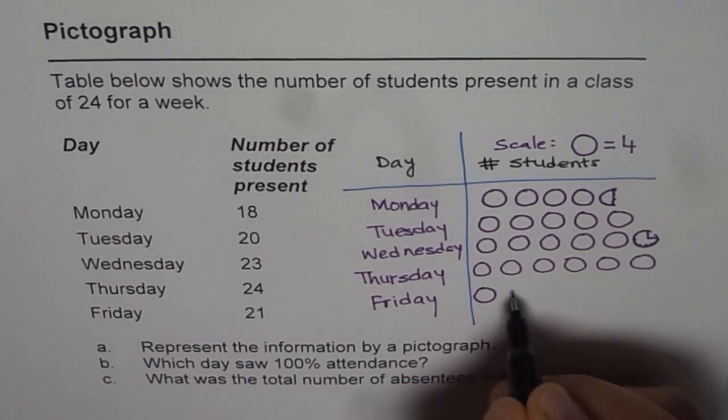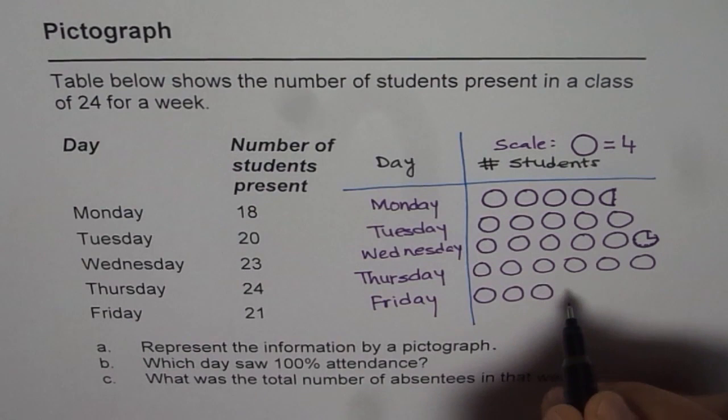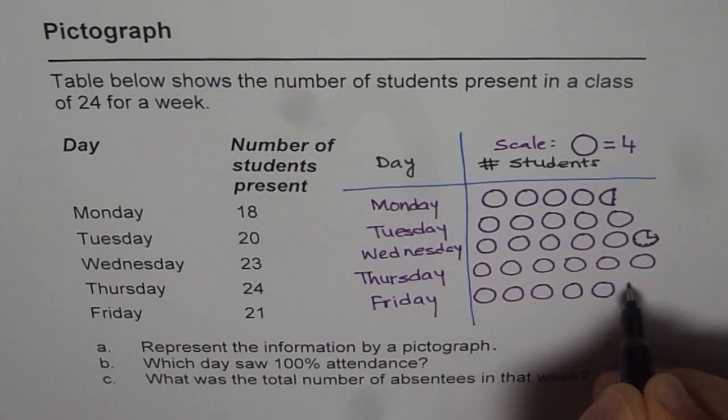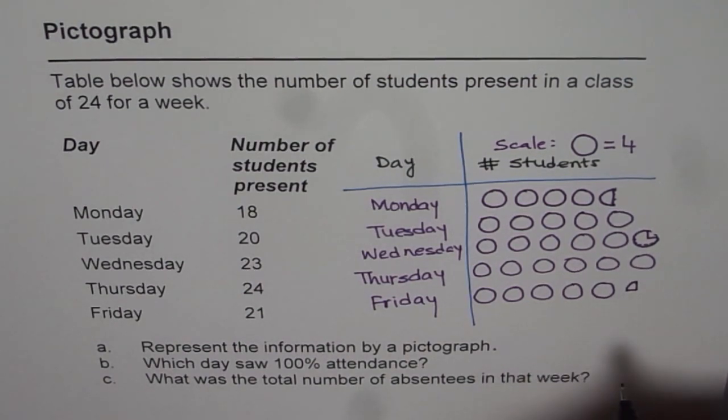21 means 5 times 4 is 20: 4, 8, 12, 16, 20 and just 1. So that means just a quarter. So we will make 1 quarter of a circle.